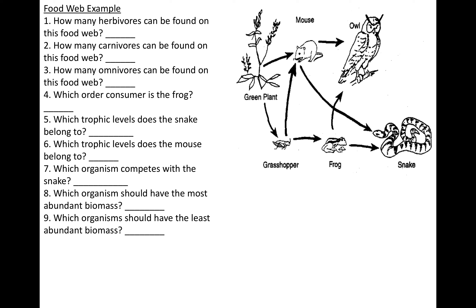Let's go through this food web example. How many herbivores can be found? Herbivores eat only the plant. The mouse eats a plant and a grasshopper, so it doesn't eat only the plant. The grasshopper eats only the plant, so there is one herbivore: the grasshopper. How many carnivores? Carnivores are strictly meat eaters. The mouse eats plants, and the grasshopper eats a plant, so neither is a carnivore. The three carnivores are the owl, the frog, and the snake. The one omnivore is the mouse — it eats the green plant and the grasshopper, which is also a consumer.